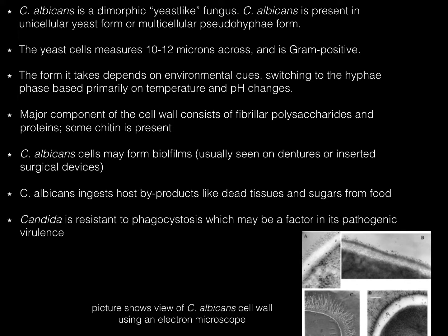Major components of the cell wall consist of fibrillar polysaccharides and proteins. Some chitin is also present in the cell walls of Candida albicans. The cells may form aggregations called biofilms, which are usually seen on dentures or inserted surgical devices.